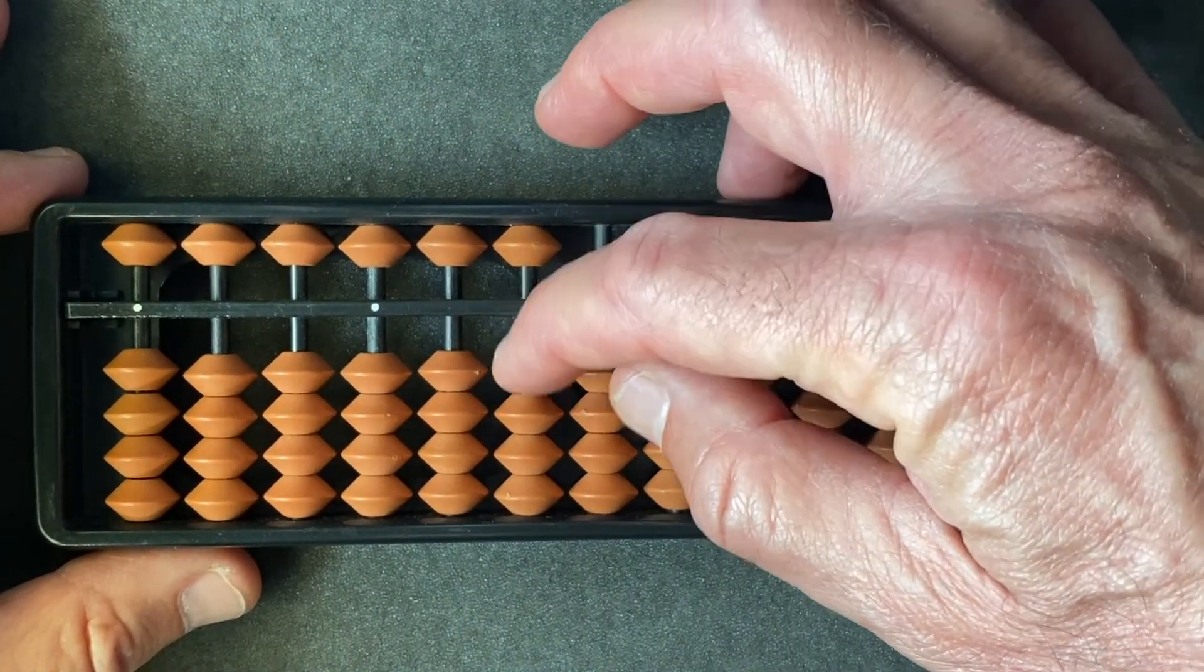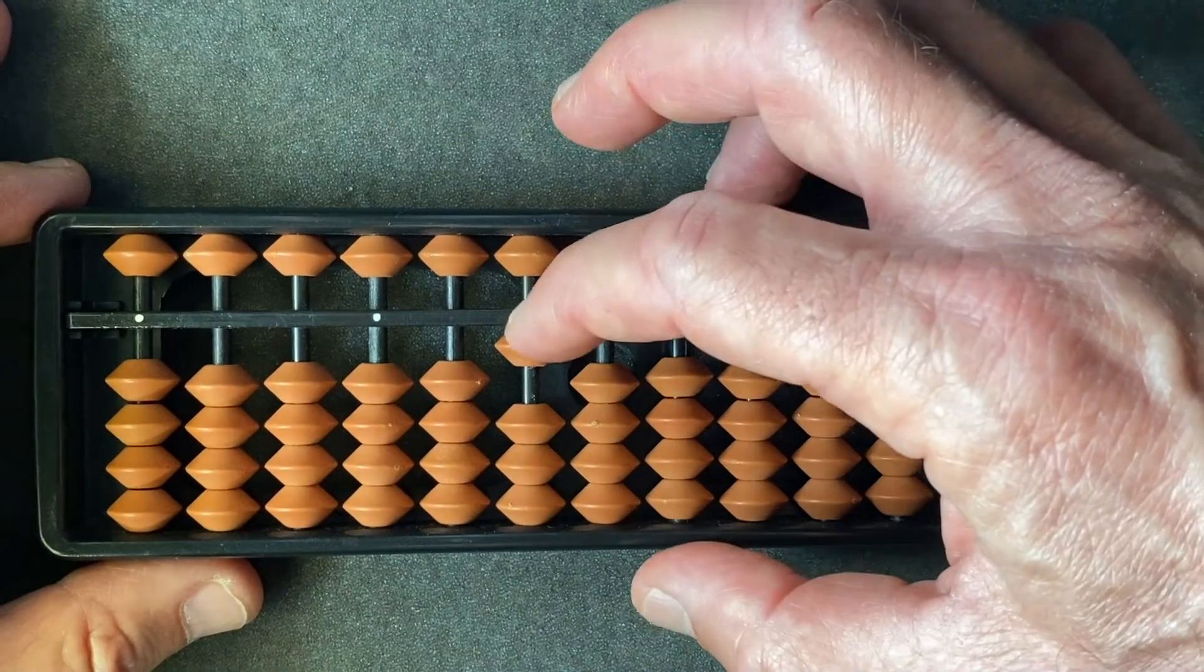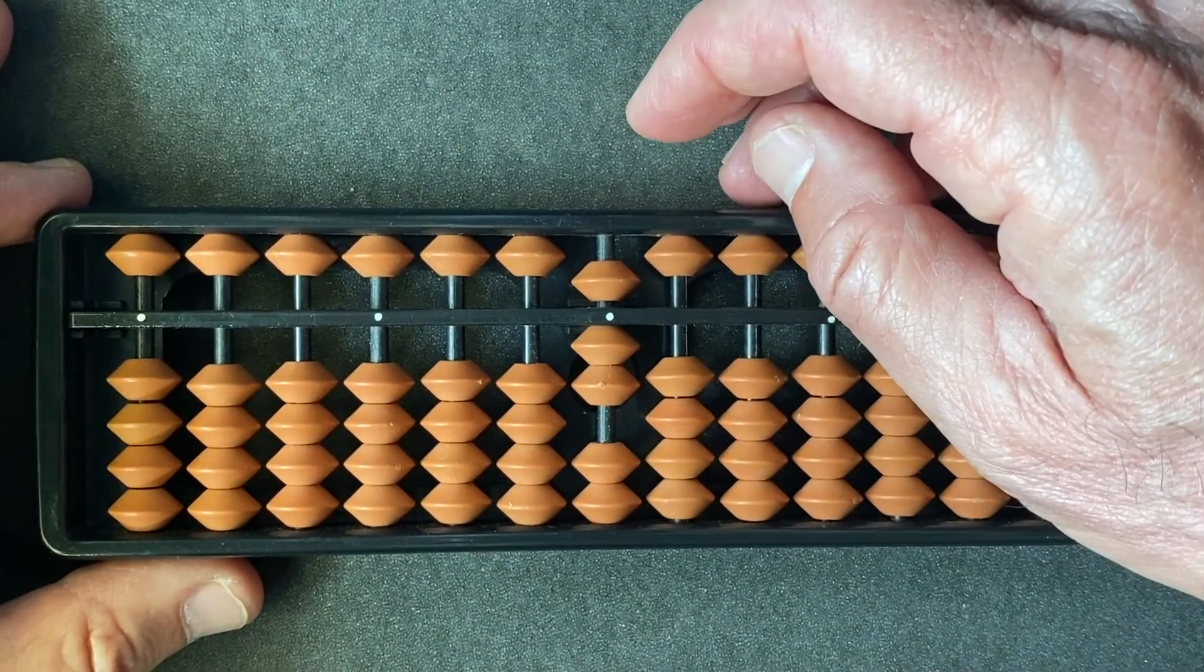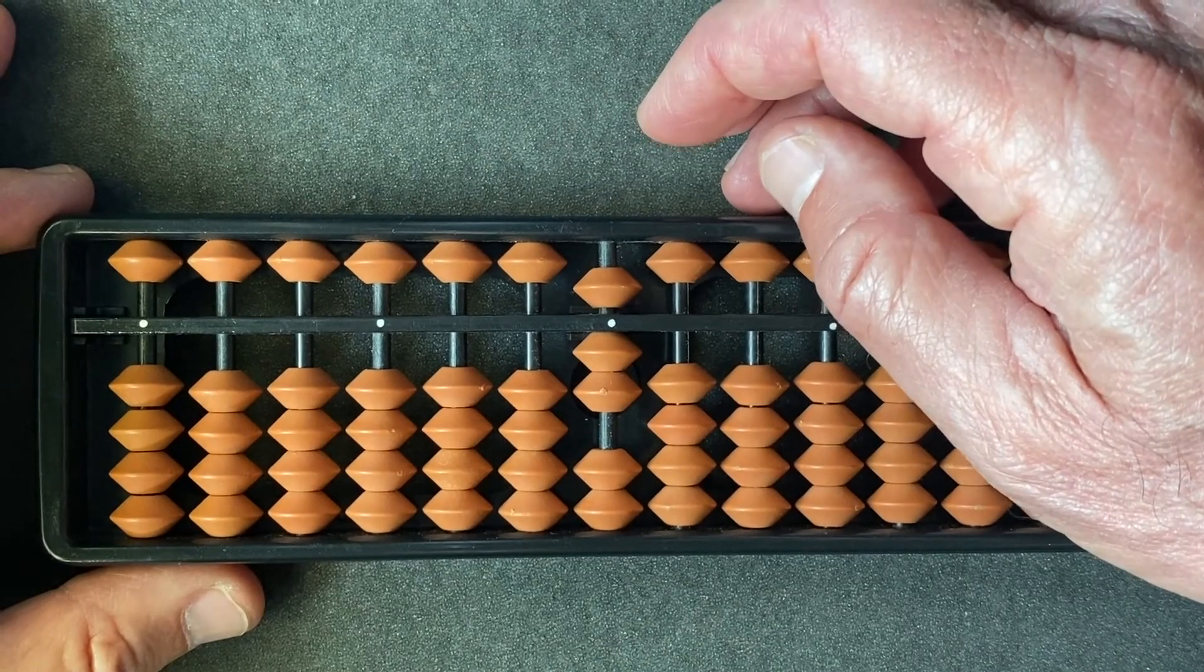So the movement we're looking at here is subtract one with our index finger and add two with the thumb. You kind of want to think of that movement almost as a single movement where you're moving both fingers almost at the same time. Just try it a few times and you'll get the hang of it.